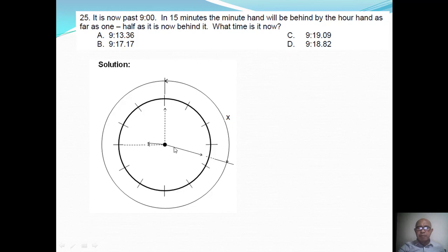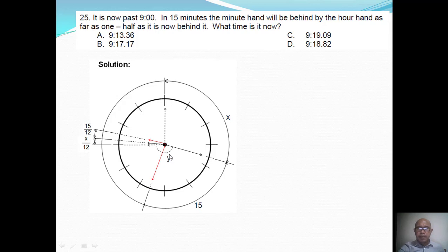From this given time, after 15 minutes, we will move the minute hand and the hour hand. When the minute hand has moved by 15 minutes, the position in which the minute hand is behind the hour hand — I call this y. So when the minute hand has moved 15 minutes, the number of minutes that the minute hand is behind the hour hand is now only one half of this amount, or y over 2.